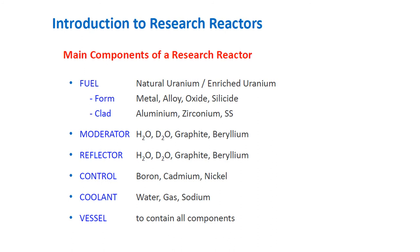Here are details about the main components of a research reactor. For the fuel, it can be either natural uranium or enriched uranium. The main difference between the fuel of a nuclear power reactor and a research reactor is that for the research reactor, uranium can be enriched above 20%. In terms of form, it can be metal, alloy, oxide, or silicide. For the cladding, you can use aluminum, zirconium, or stainless steel.